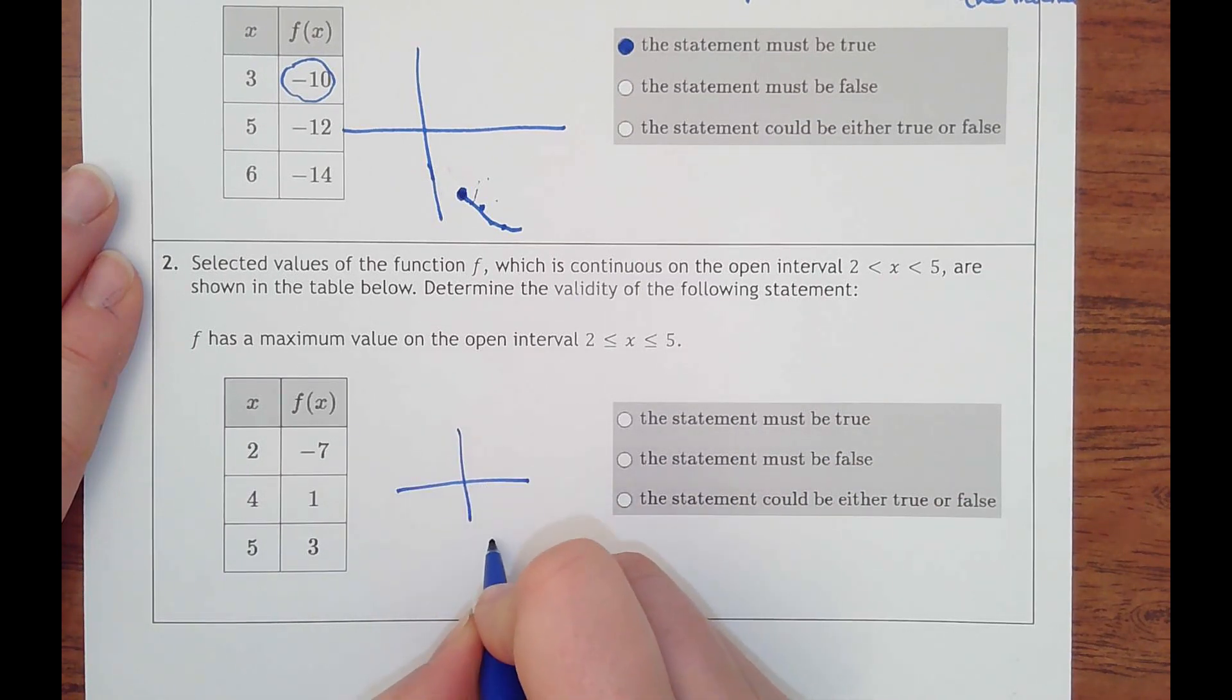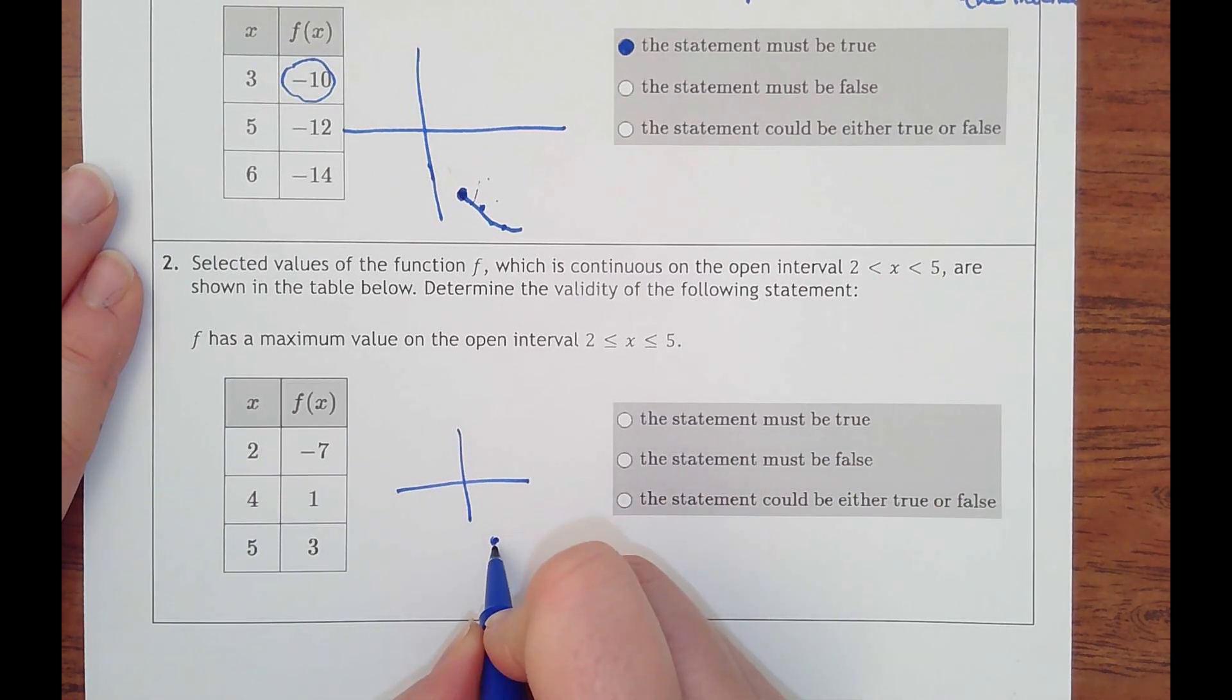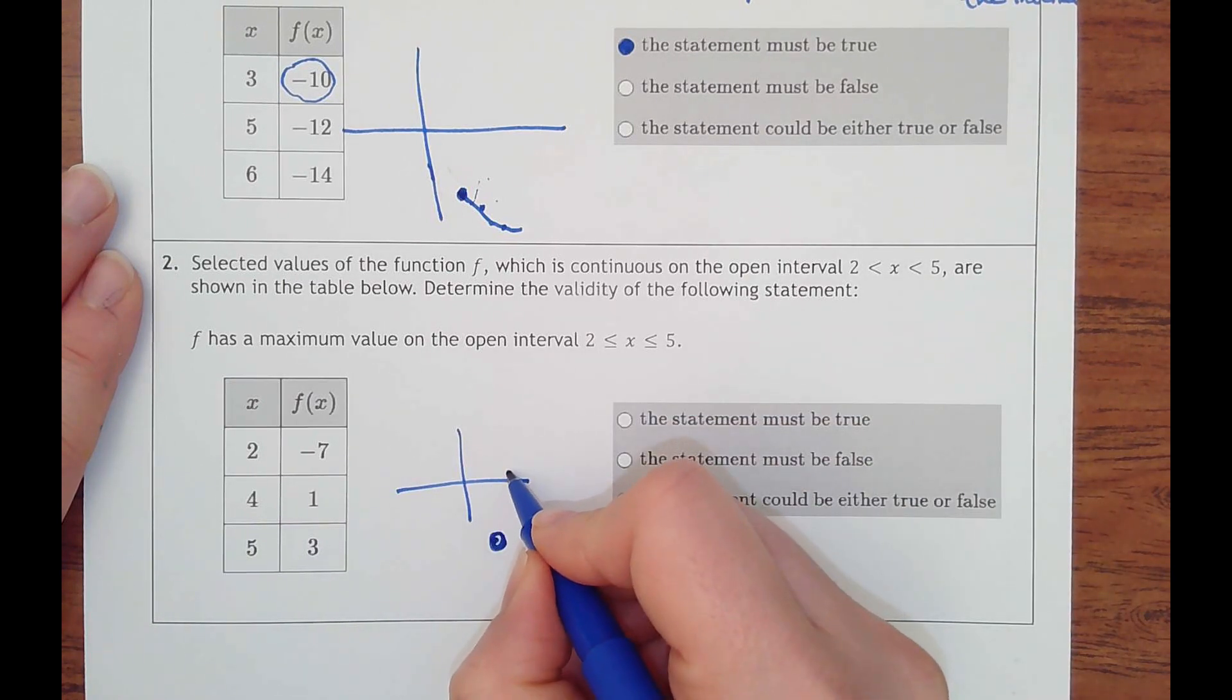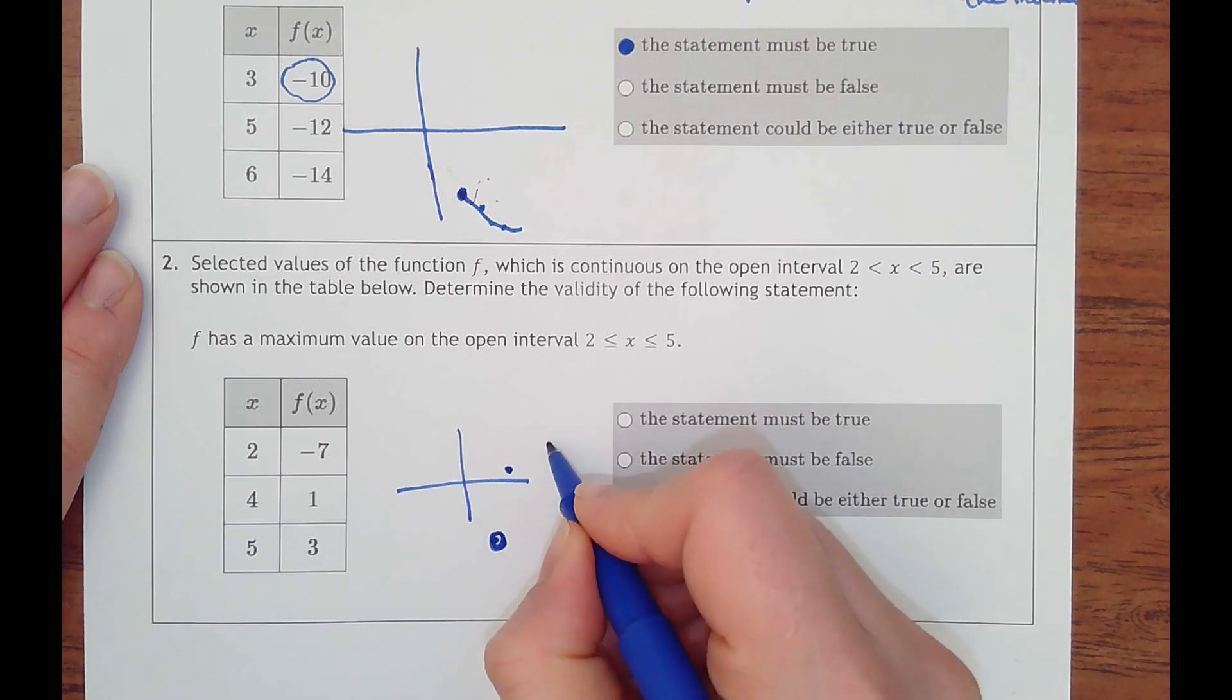Let's graph: 2, negative 7. And this says open interval: 4, 1, and then 5, 3.